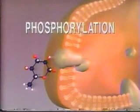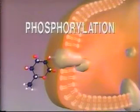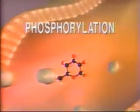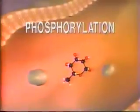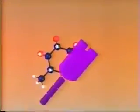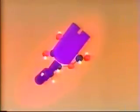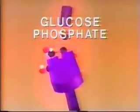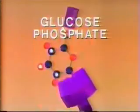Now for the details. In the first reaction called phosphorylation, a phosphate group from one ATP is transferred to glucose, producing glucose phosphate and ADP.